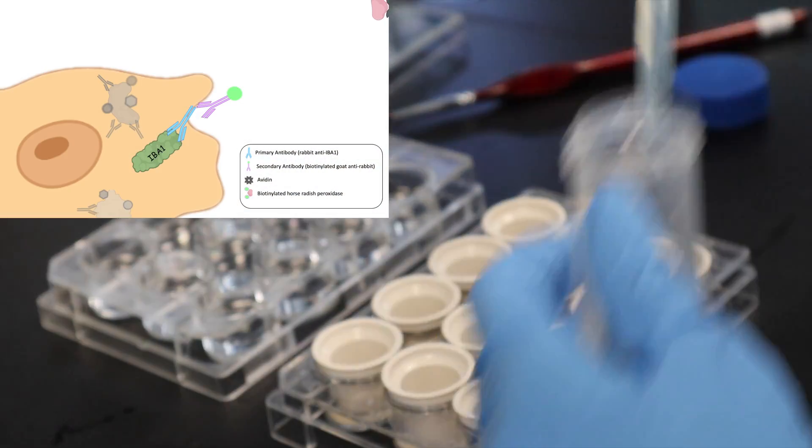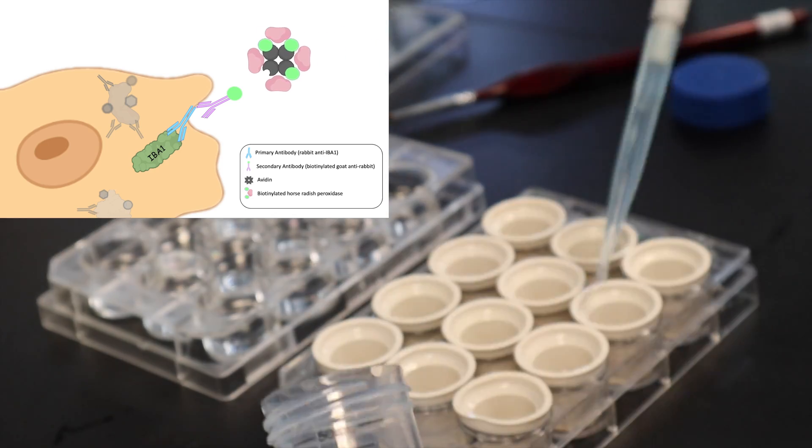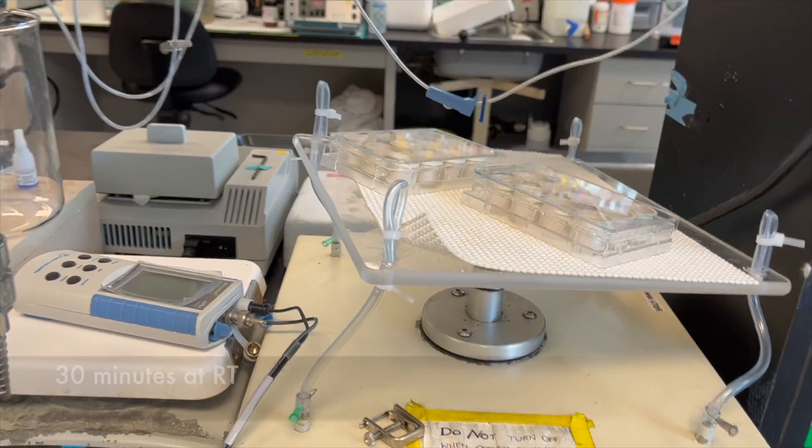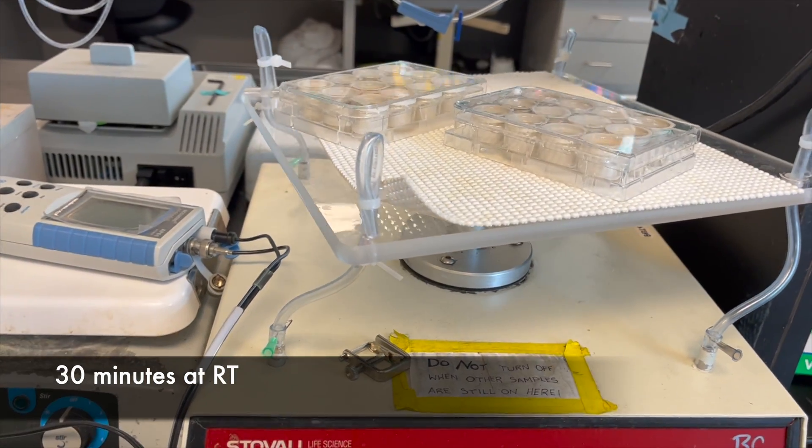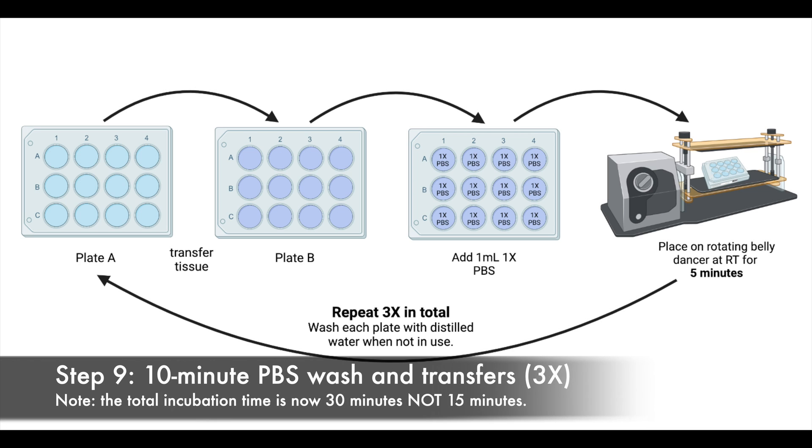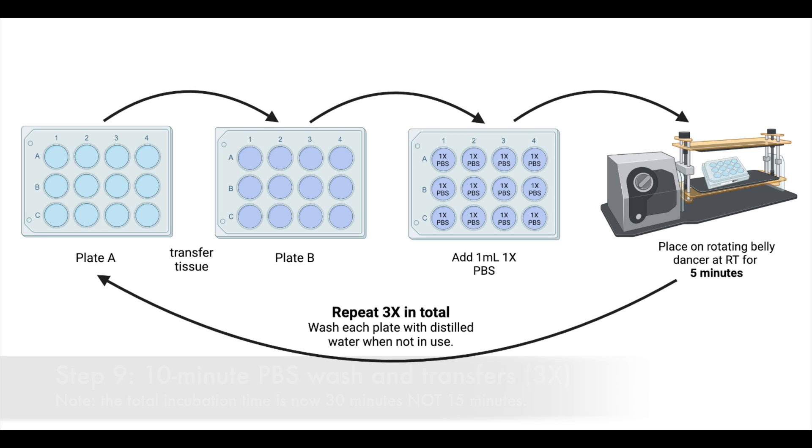Once ready, add 1 milliliter of ABC complex solution to each well in a new plate and then incubate the sample at room temperature for 30 minutes. Next, complete another set of 10-minute PBS wash and transfers.